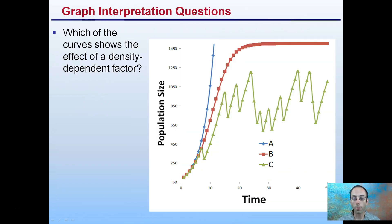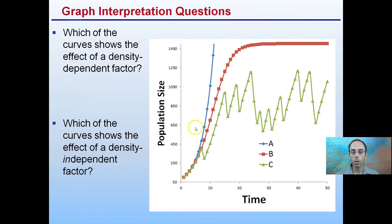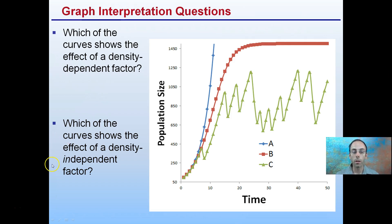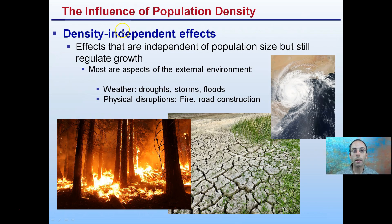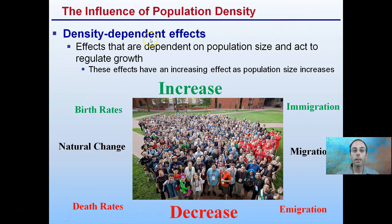Looking at a graph here, we see line A, line B, and line C. Which one of these curves shows the effect of density-dependent factors, and which shows density-independent factors? Keeping in mind, density-independent ones are external factors such as droughts, storms, and floods. Density-dependent could be birth rates or death rates, immigration or emigration.